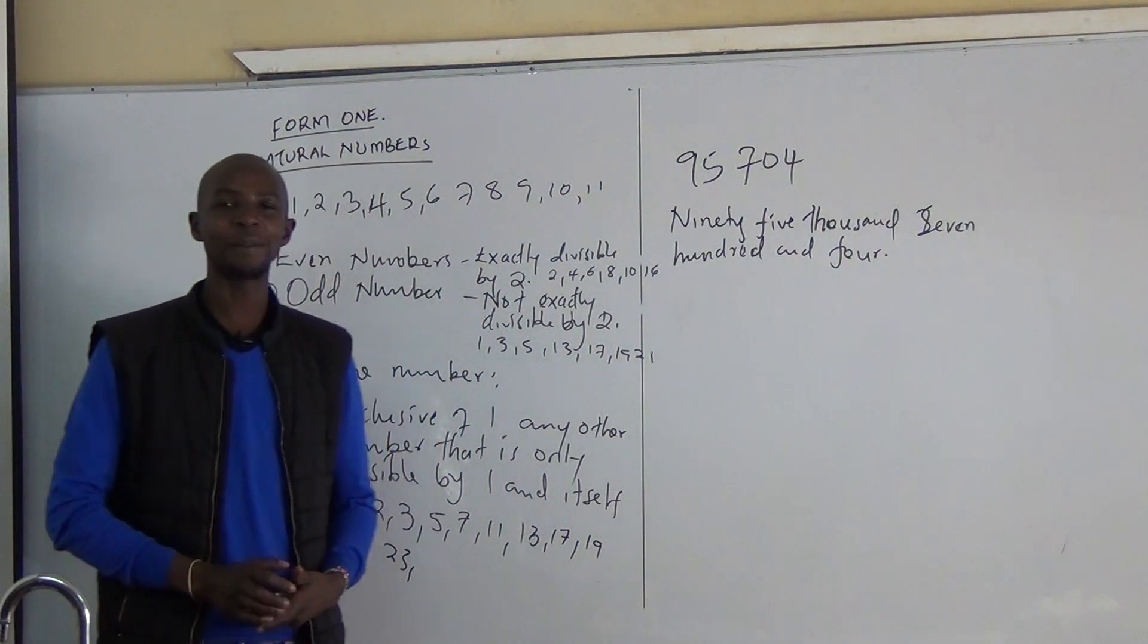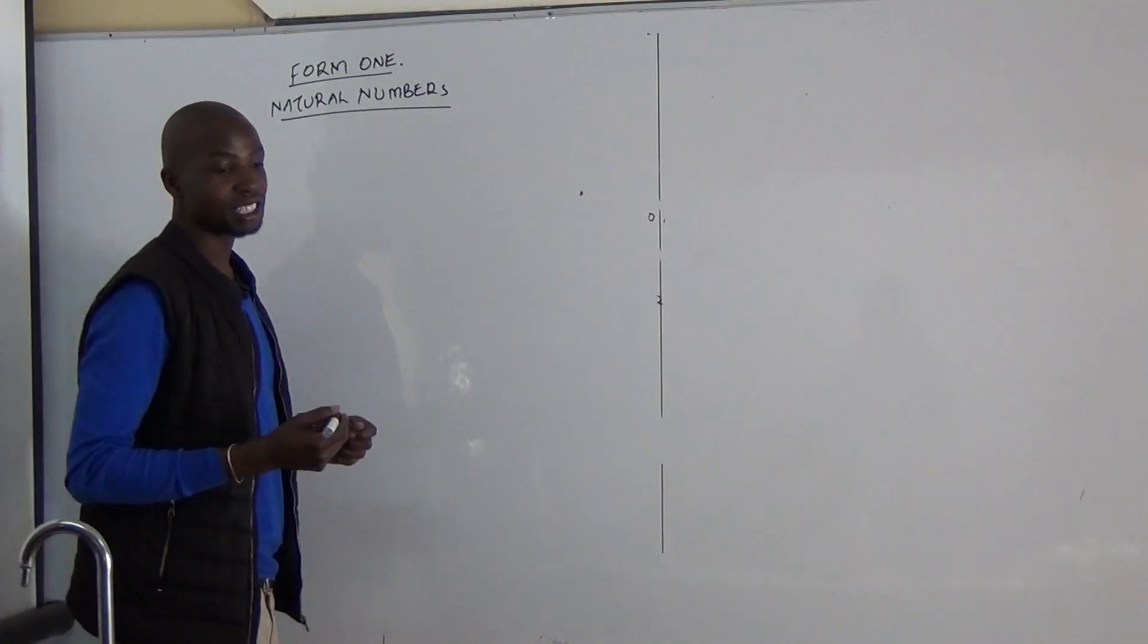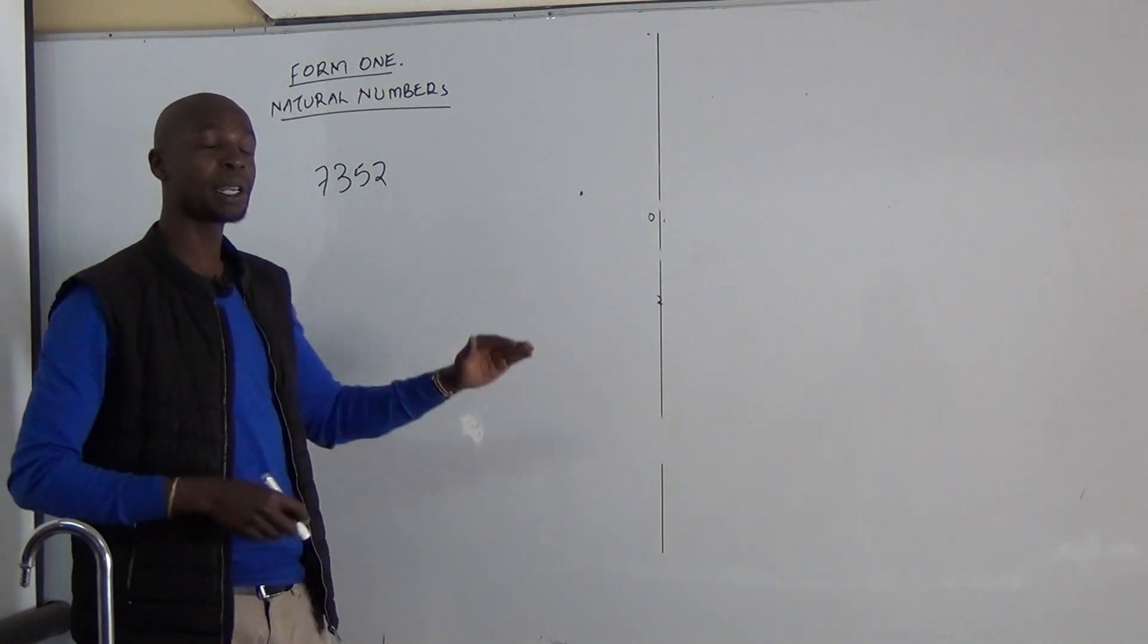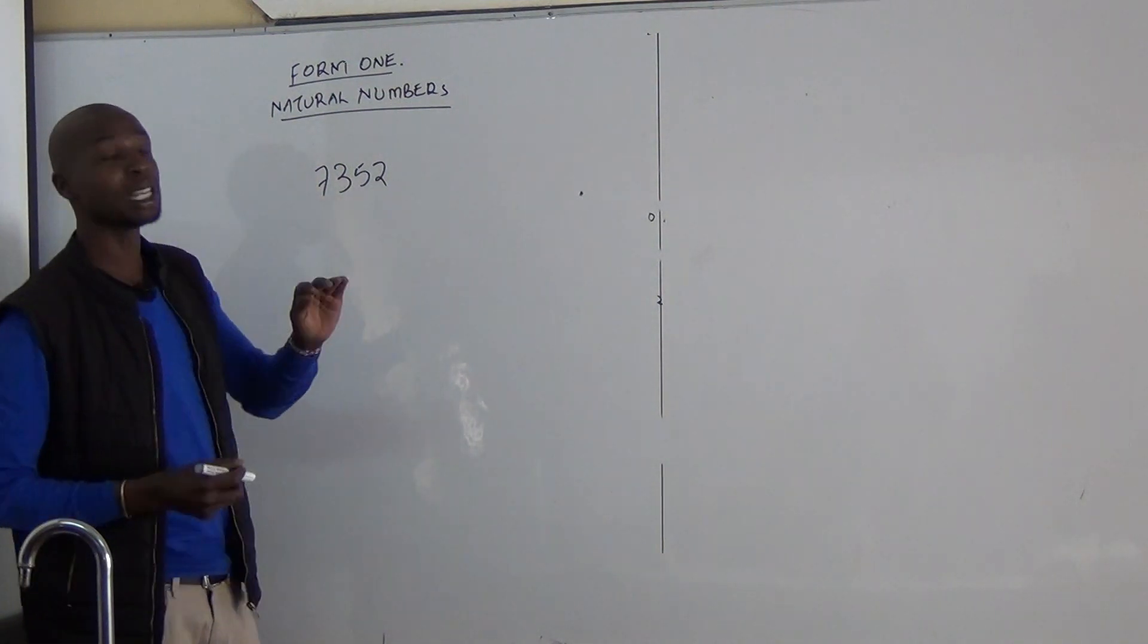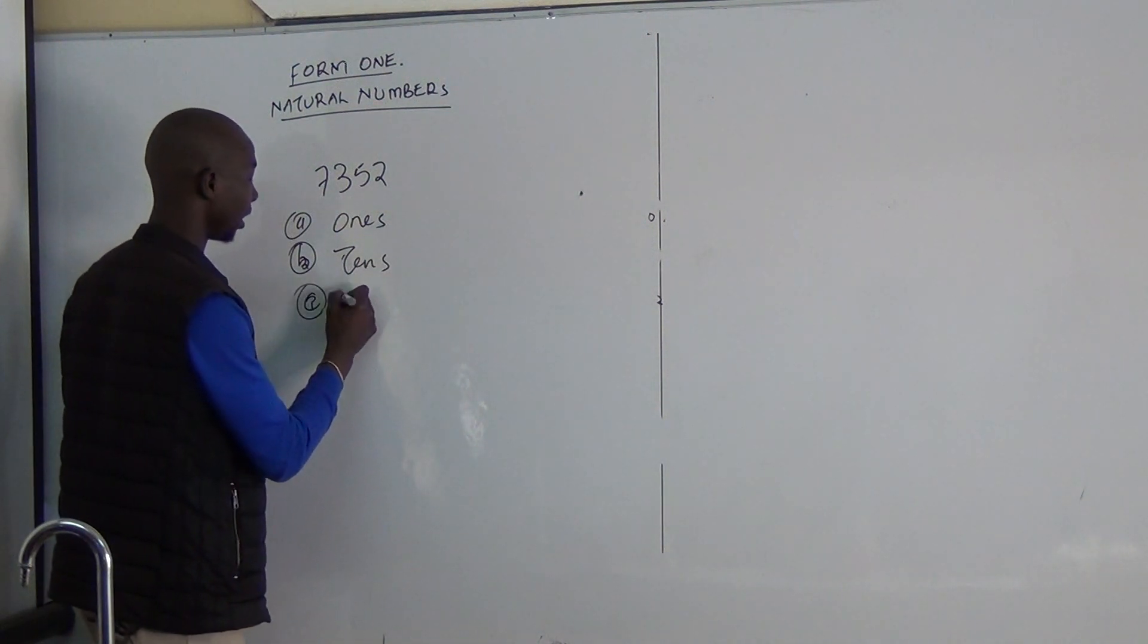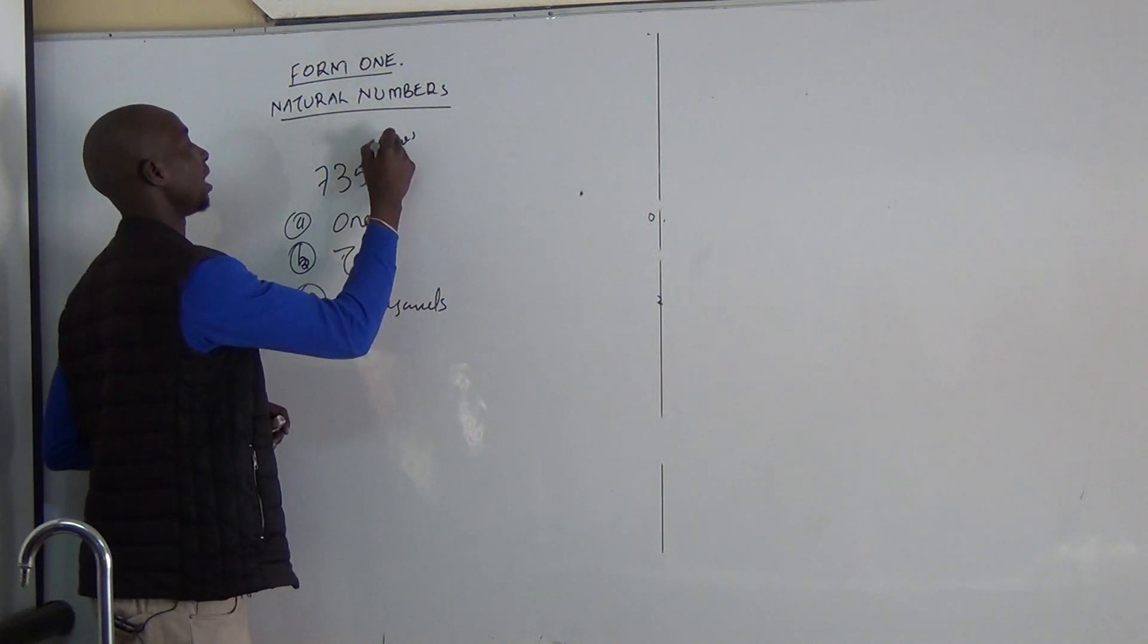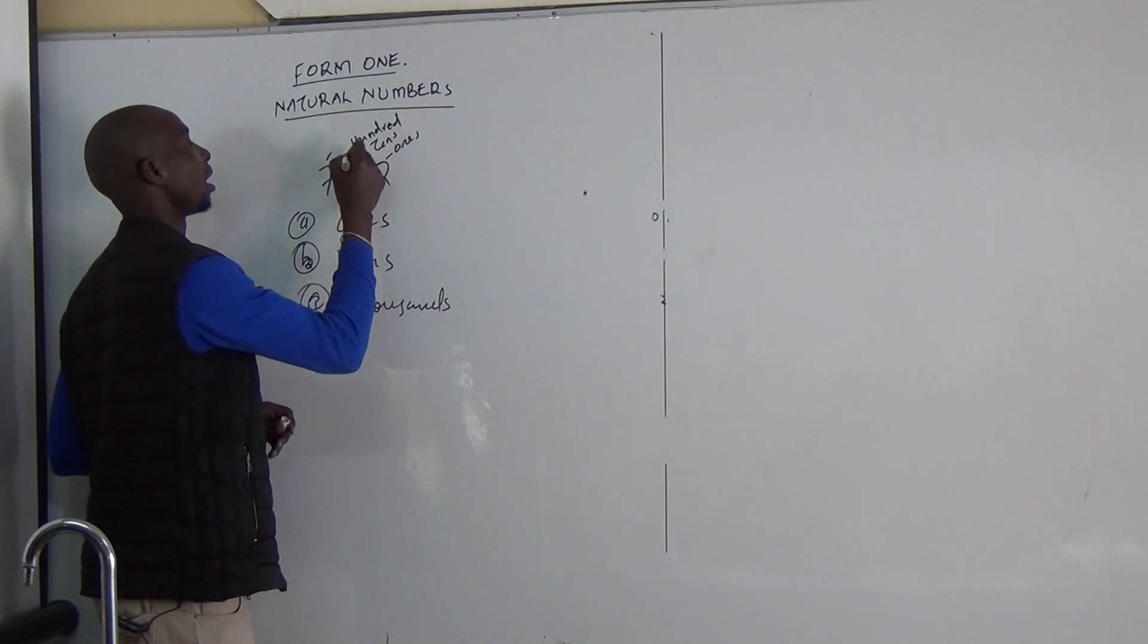I want us to look at something else that is rounding off. Rounding off of numbers. So let us consider a number like 7352. The place value of a number will determine the value to which you are going to round off to. So round off to the nearest tens, hundreds, thousands. So you are going to come to this number and say this is ones, this is tens, this is hundreds, and this is thousands.